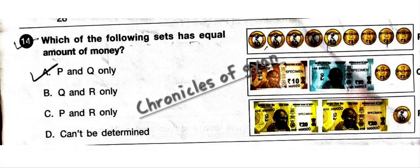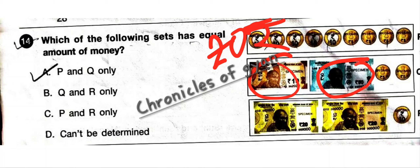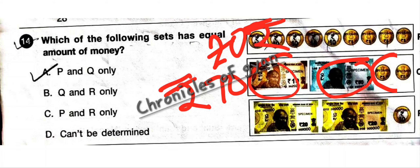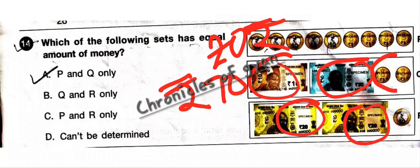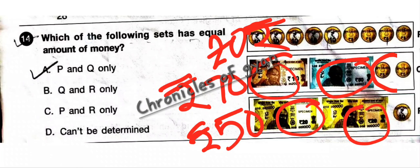Question 14: Which of the following sets has an equal amount of money? Looking at set P: 10 coins of 5 rupees each = 50, plus 20 = 70. So P's value is 70 rupees. For Q: 10 + 50 = 60, plus 25 = 85. Wait — checking again, P and Q have the same value. So the answer is option A.